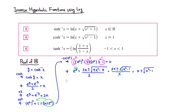To isolate y, we take the natural log of both sides. The natural log and exponential function cancel, leaving y equals natural log of x plus or minus square root of x squared minus 1.